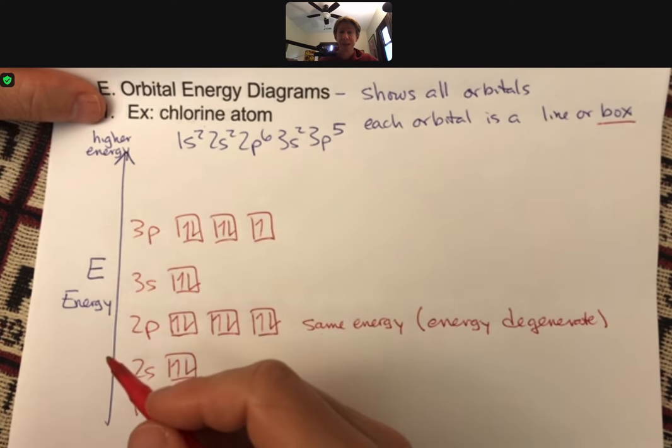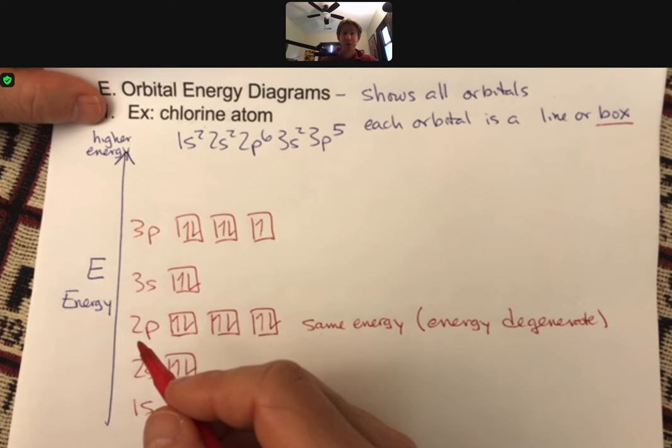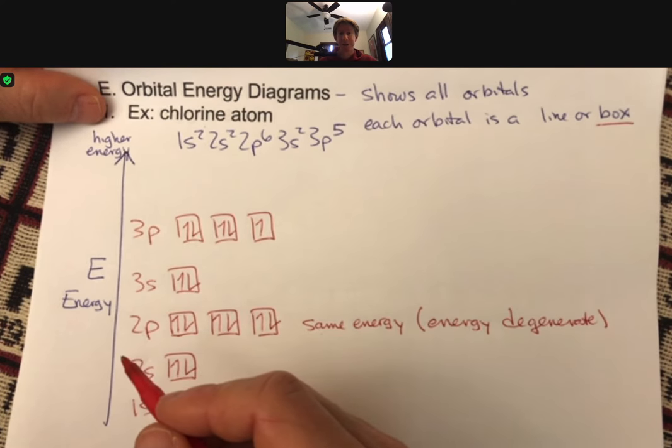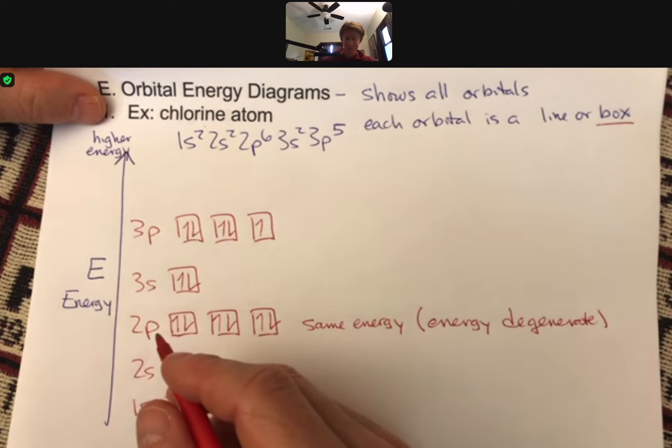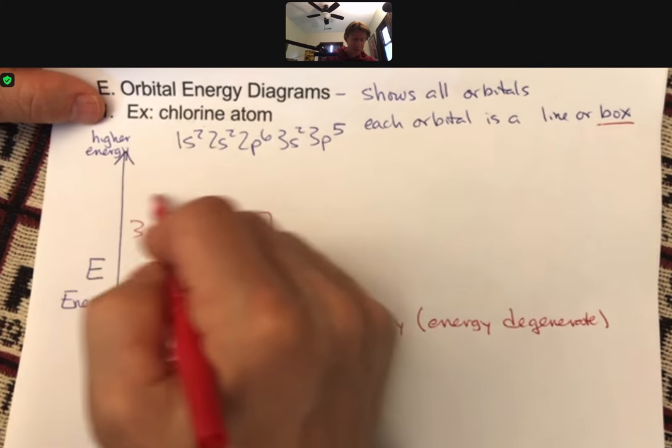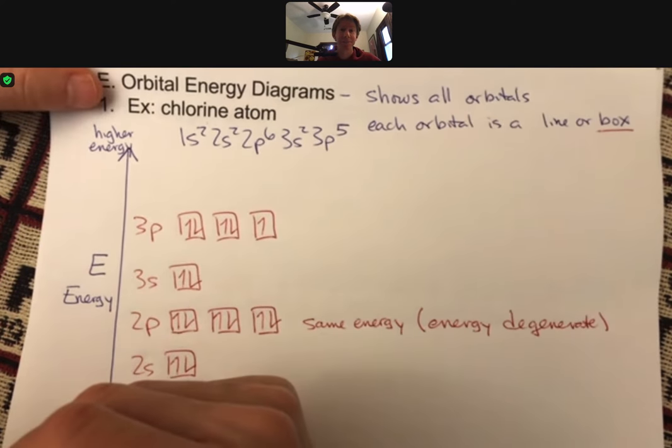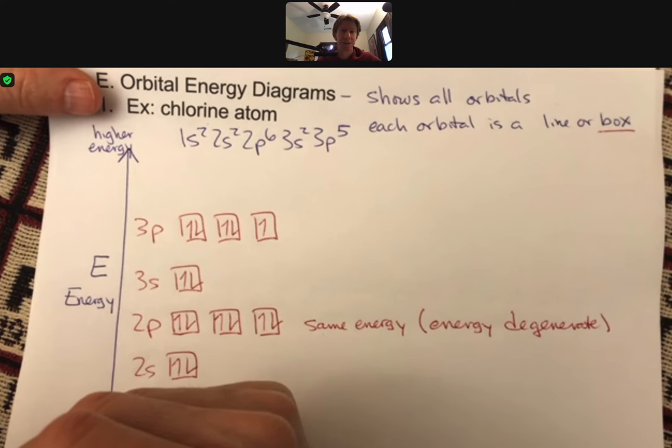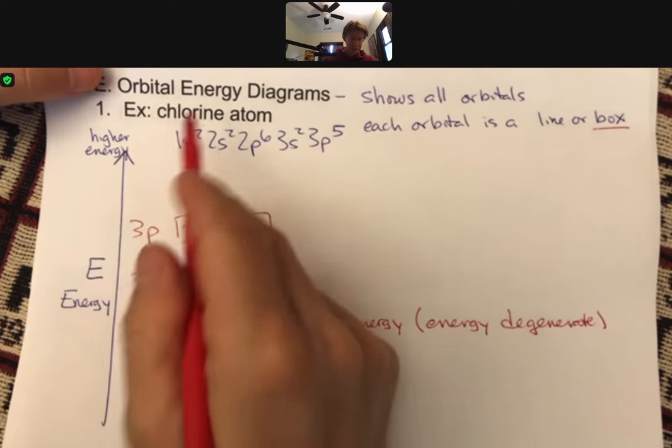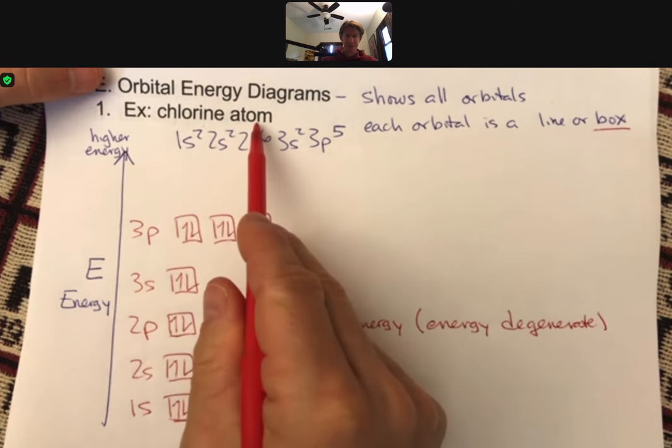Technically the chlorine atom does have a 4s, a 3d, et cetera, but they're vacant. So they're up here somewhere, but we don't need them. They're empty. They exist. They're just empty. And this is the orbital energy diagram for a chlorine atom.